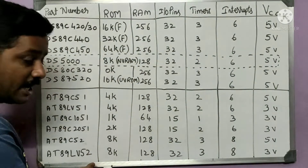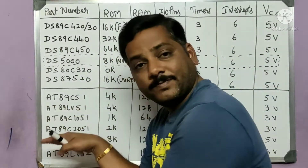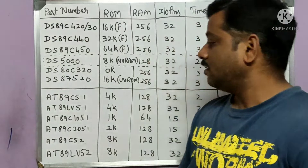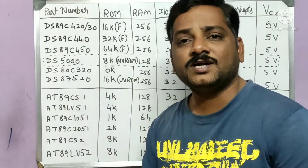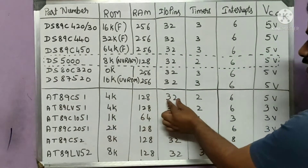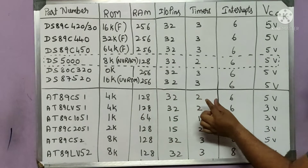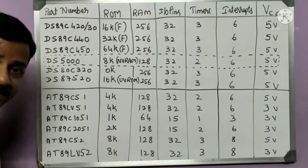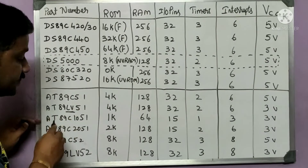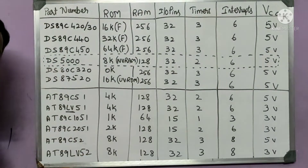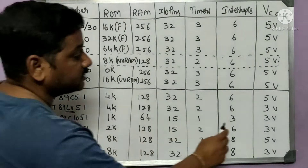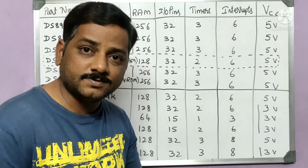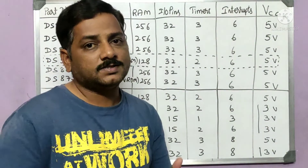The next manufacturer is Atmel — 'AT' stands for Atmel in short. The AT89C51 is generally and widely used: 4K ROM, 128 bytes RAM, 32 I/O pins, two timers, six interrupts, and 5V. Other Atmel ICs include LV variants — 'LV' stands for Low Voltage — where 'C' is CMOS. The operating voltage for LV variants is 3V instead of 5V, and some have different numbers of interrupts.